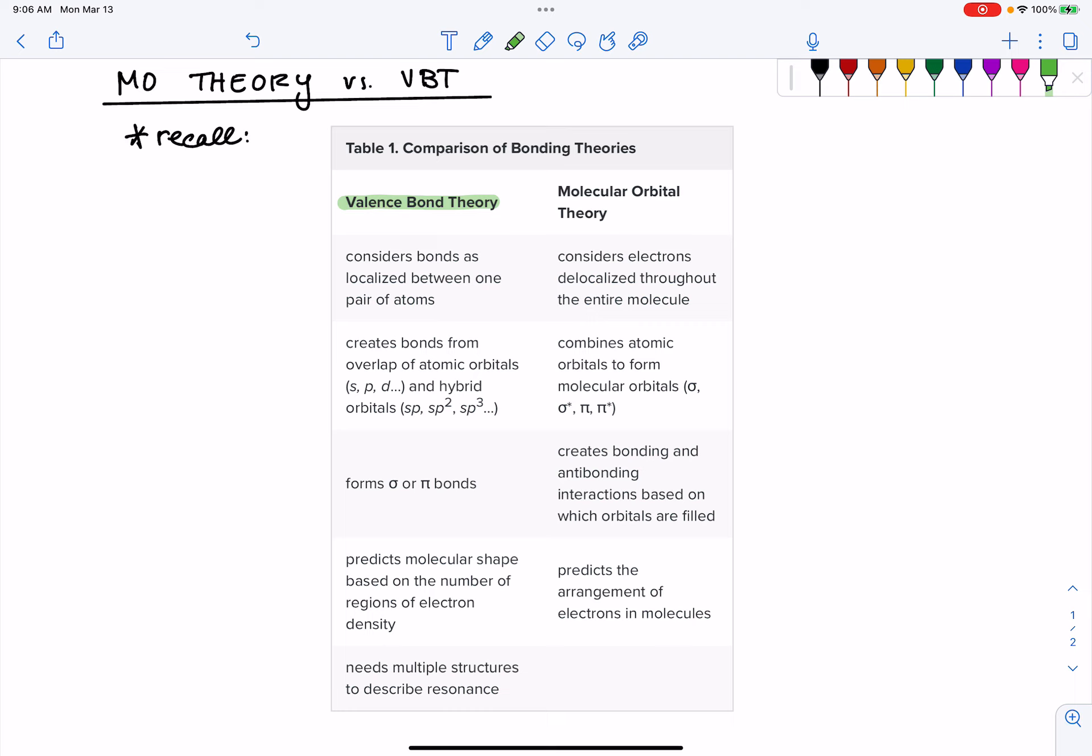Let's review what we know about valence bond theory. The first thing that valence bond theory does is it considers bonds as localized between one pair of atoms, where localized just means found in one space. So we've got our bonding electrons located in one specific region in the molecule that is between two atoms.